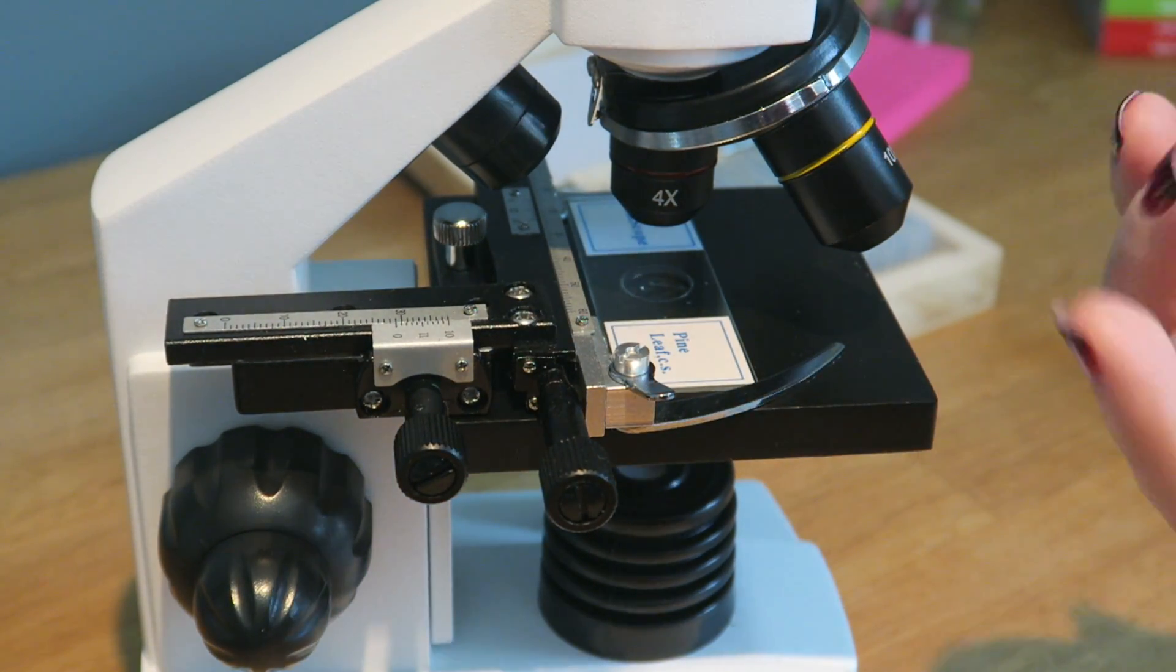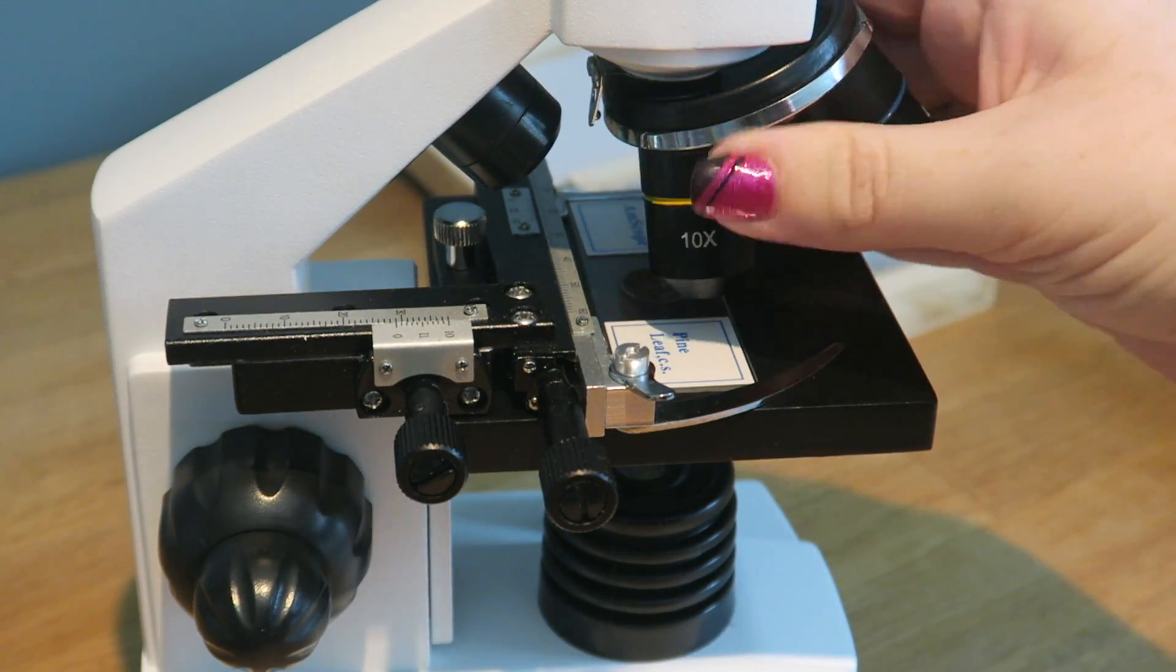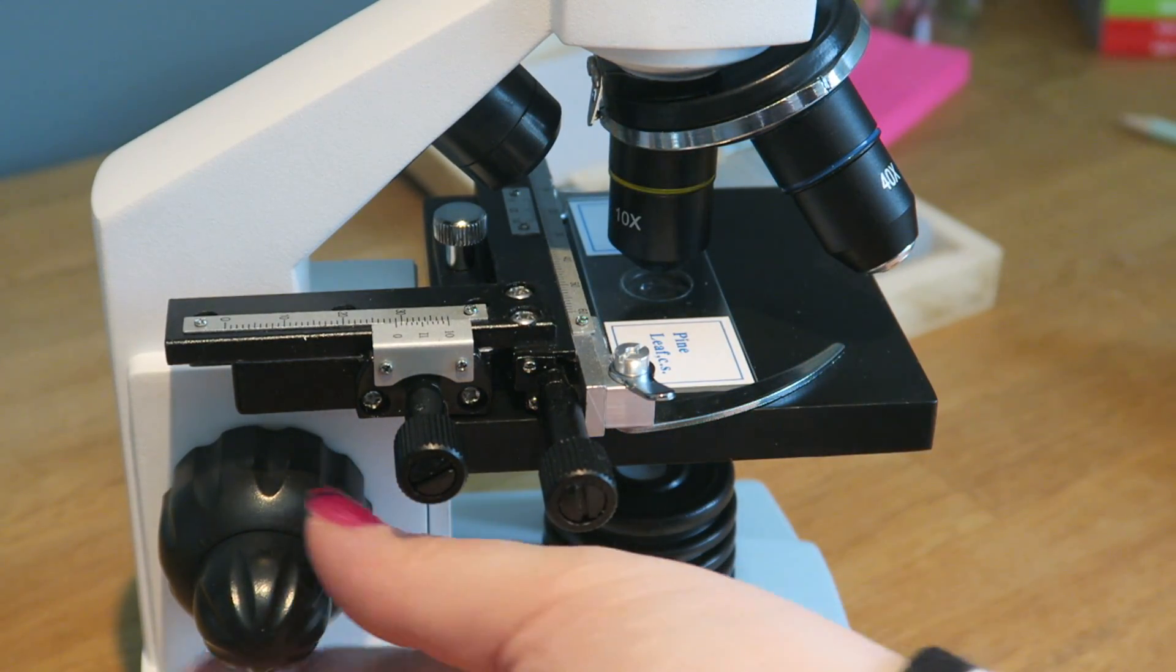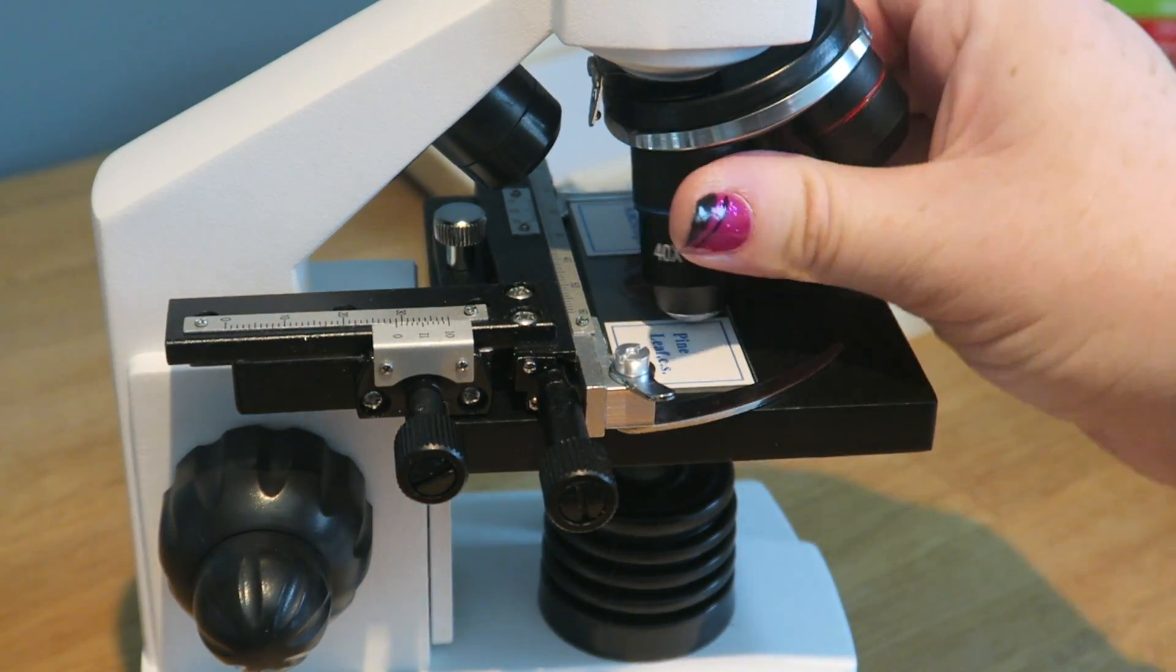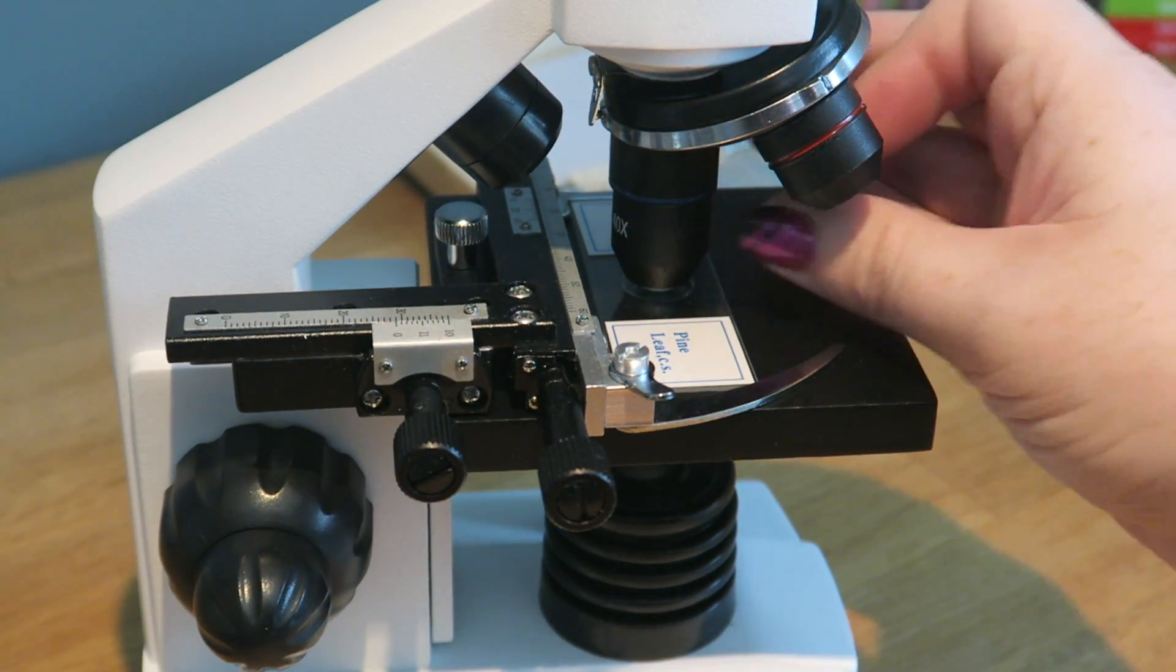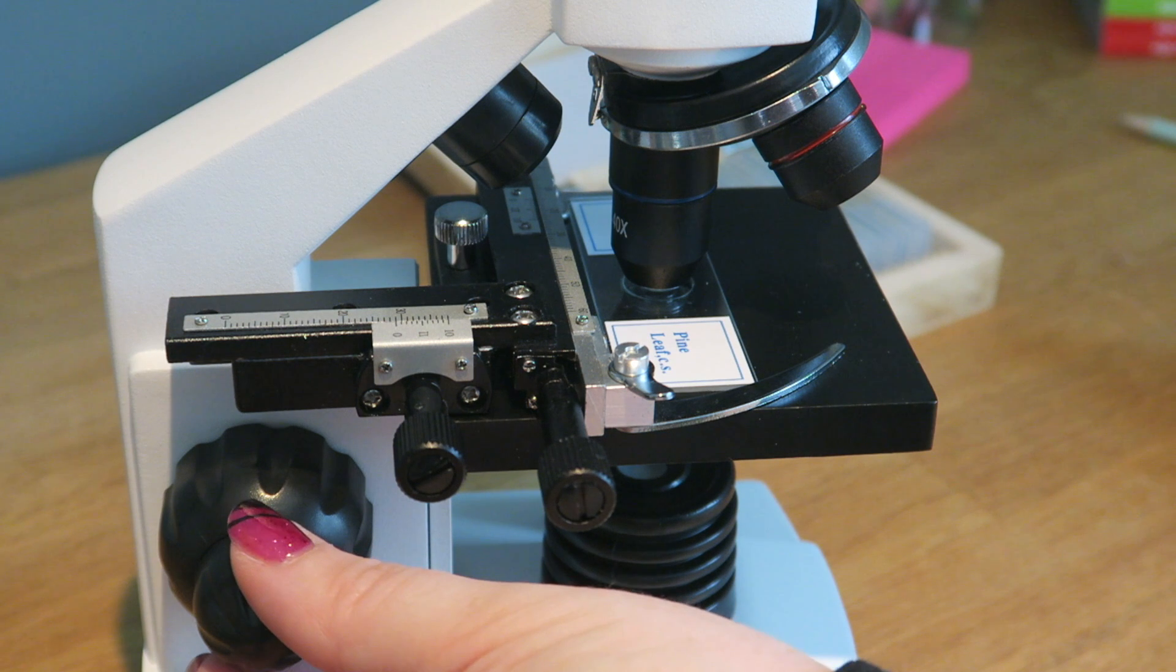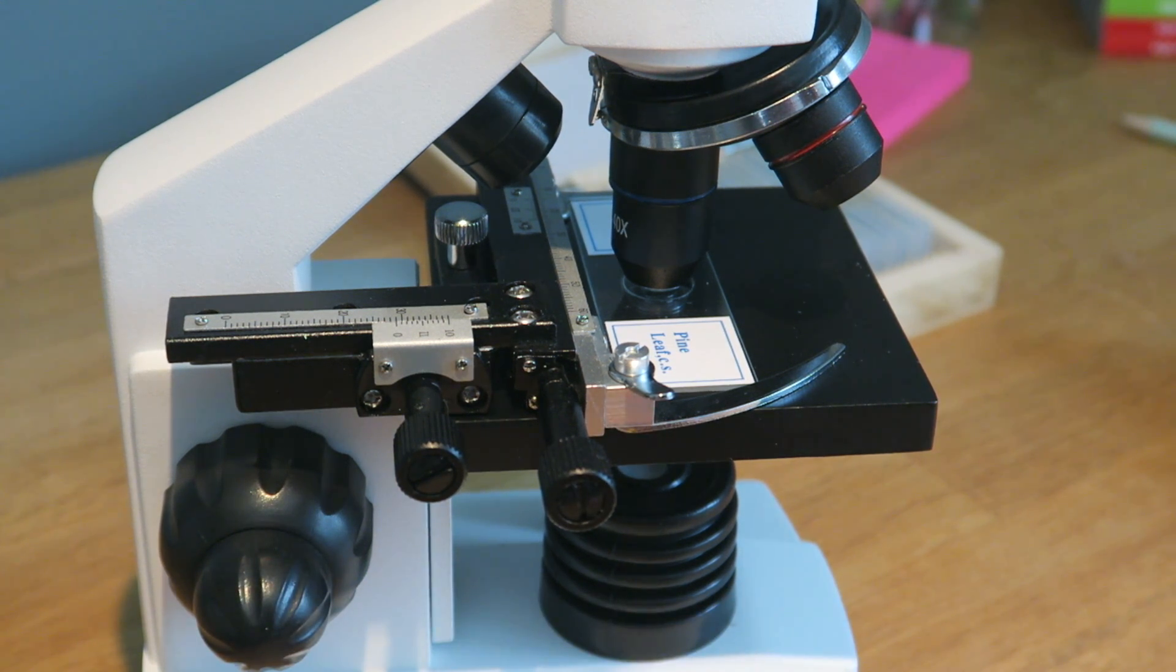You can then look through the eyepiece, focus it, and then change it to a 10 times objective. Adjust the focus ever so slightly. Change it to a 40 times objective, and I know that feels really close, and adjust it so you can see what is going on. I'm going to do a much more detailed video of me actually doing this when I go through the practicals.